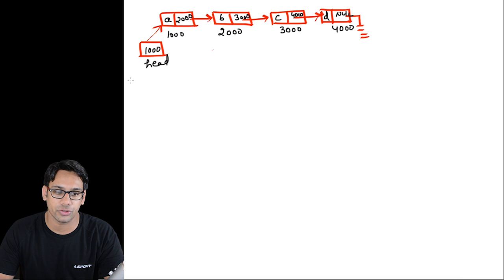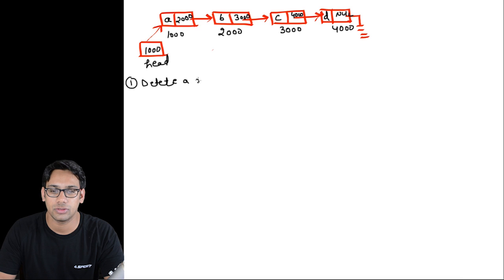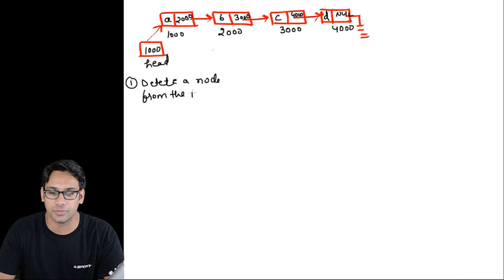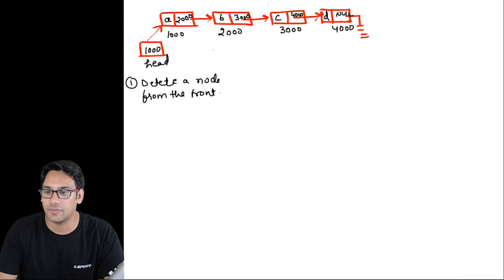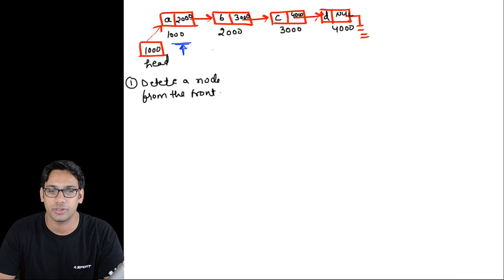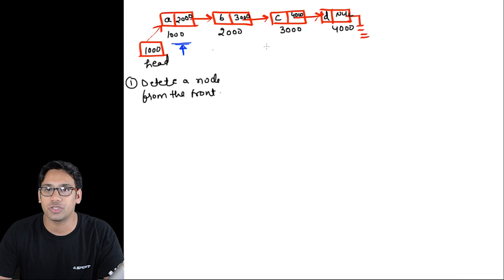The first program we are going to write is to delete a node from the beginning, or front, of the linked list. We want to delete this front node. So what operations do we need to perform?